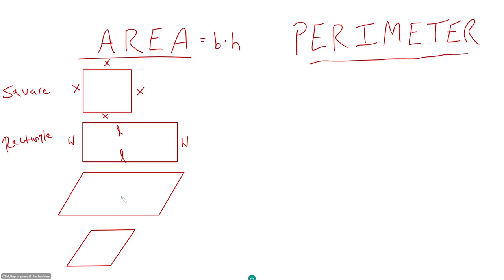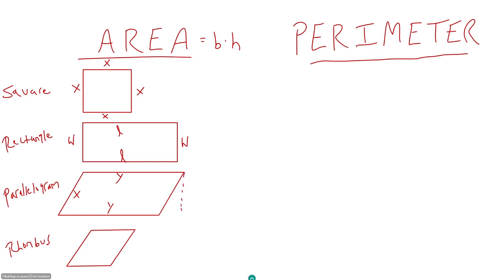Base times height starts making more conceptual sense when we talk about parallelograms and rhombi. In a parallelogram where opposite sides are equal — say these two sides are x and these two sides are y — you would not say the area is x times y. If y is your base, the height must be perpendicular to that base and connect to the opposite vertex. So the height is an imaginary line perpendicular to y, and the area of the parallelogram is y times h.